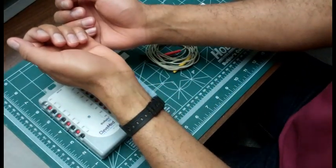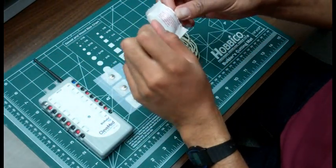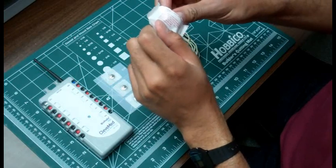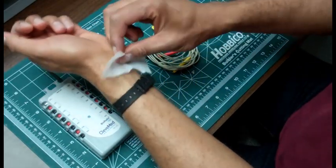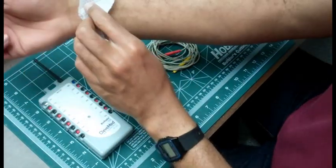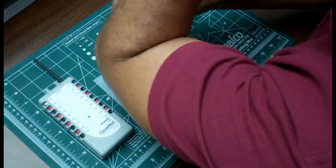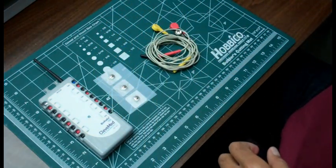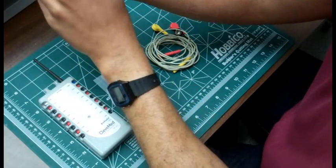We will record ECG from the wrist. We will clean the skin with an alcohol wipe. You can use a paper towel or napkin to wipe off excess alcohol.